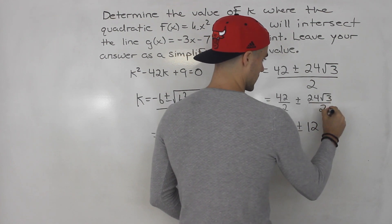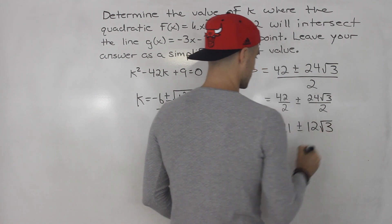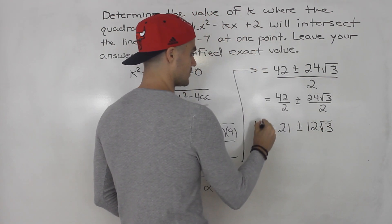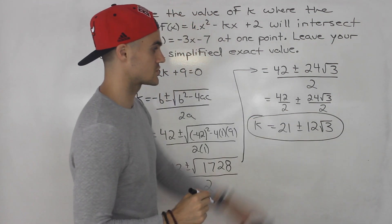This is plus or minus 24 divided by 2 is 12. And then the root 3, there's no roots here that we're dividing by. So we would leave that as root 3. So that is the answer. There's actually two answers. 21 plus or minus 12 root 3.